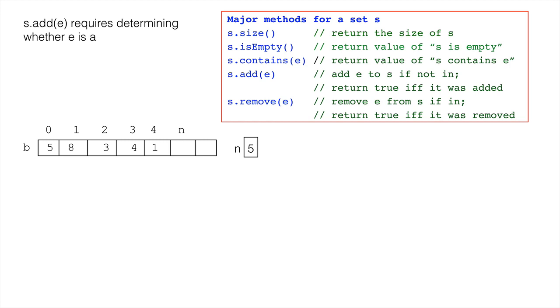A request to add an element involves first determining whether the element is already in b[0..n-1], because it can't be added if it's already there. Similarly, a request to remove an element involves determining whether the element is in the array segment.